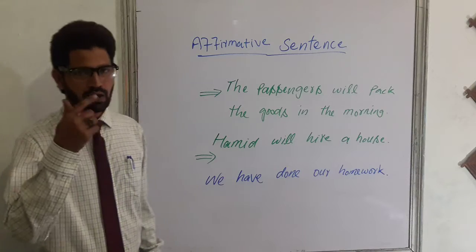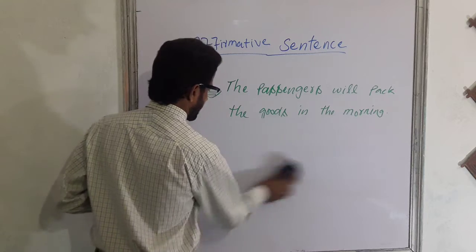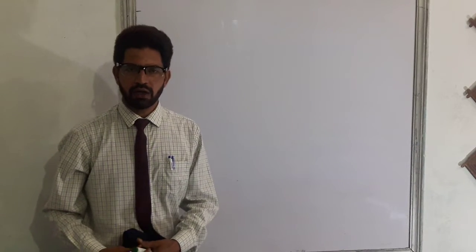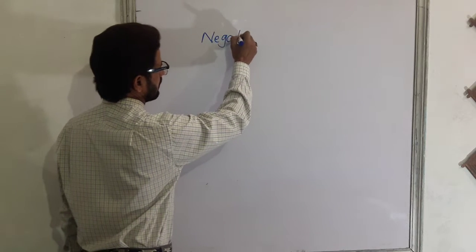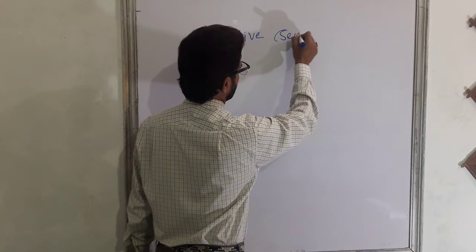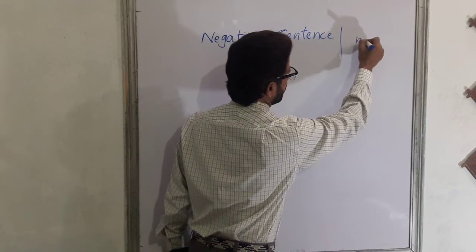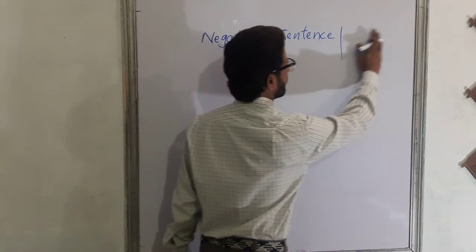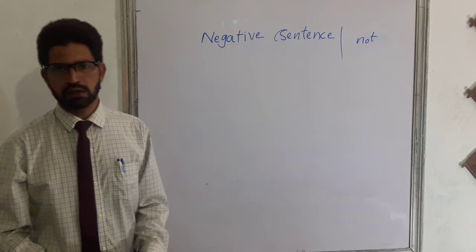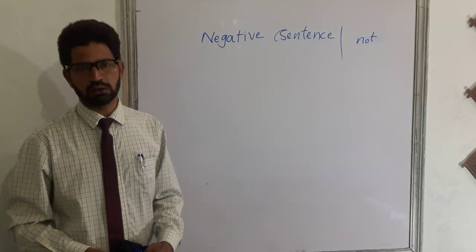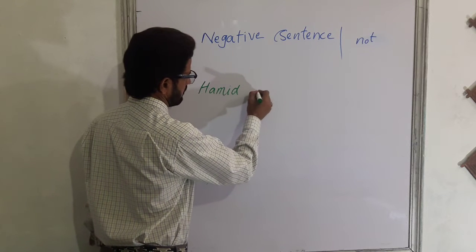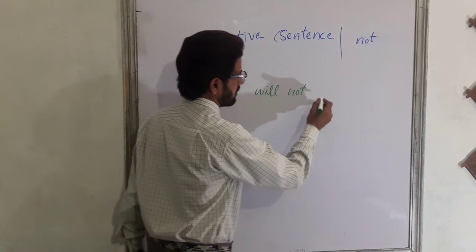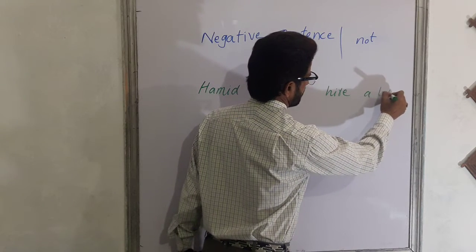Another form of sentence is the negative sentence. In negative sentences there is a complete negativity — a denial about something. The word 'not' is written in the sentence to show negativity in its sense. For example: 'Hamid will not hire a house.'